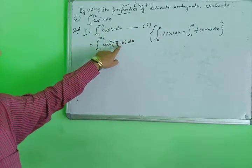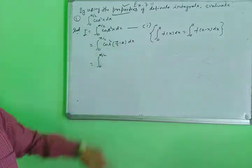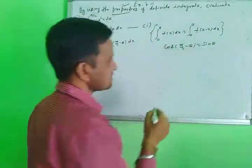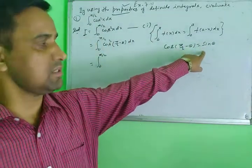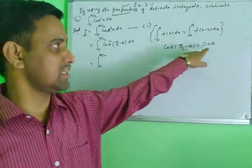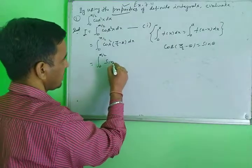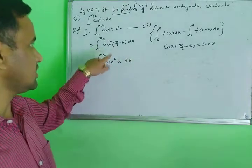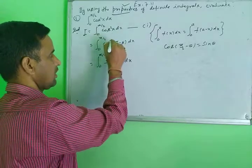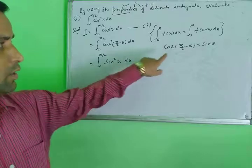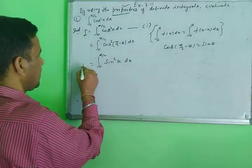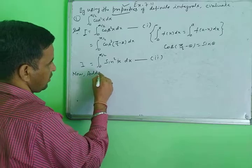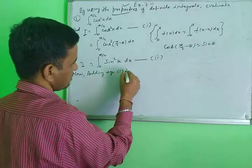Using the property with a equal to π/2, the integral becomes from 0 to π/2 of cos²(π/2 minus x) dx. Since cos(π/2 minus θ) equals sin θ, we have cos²(π/2 minus x) equals sin²x. So I equals the integral from 0 to π/2 of sin²x dx — this is equation 2.